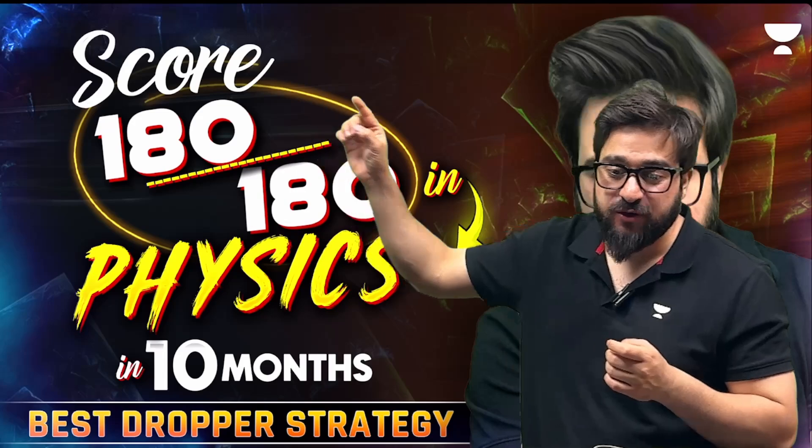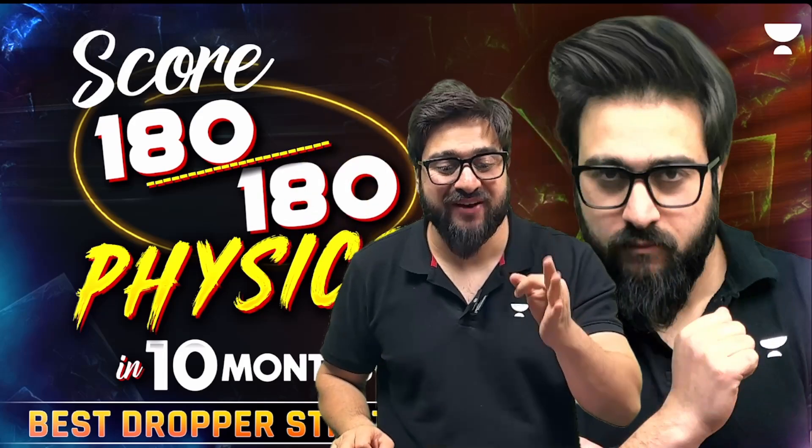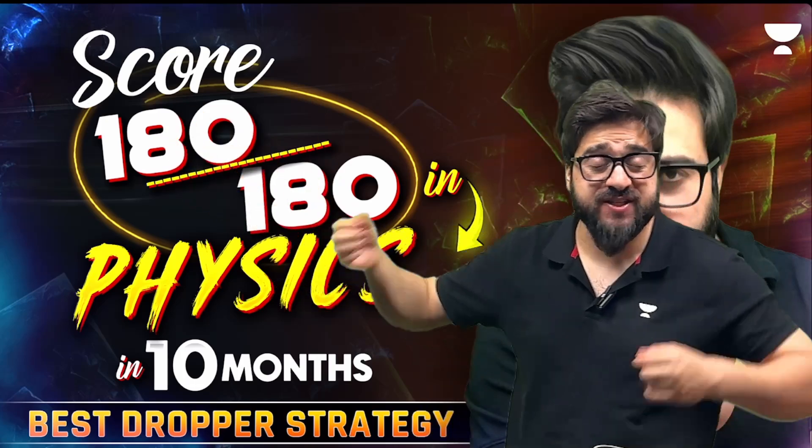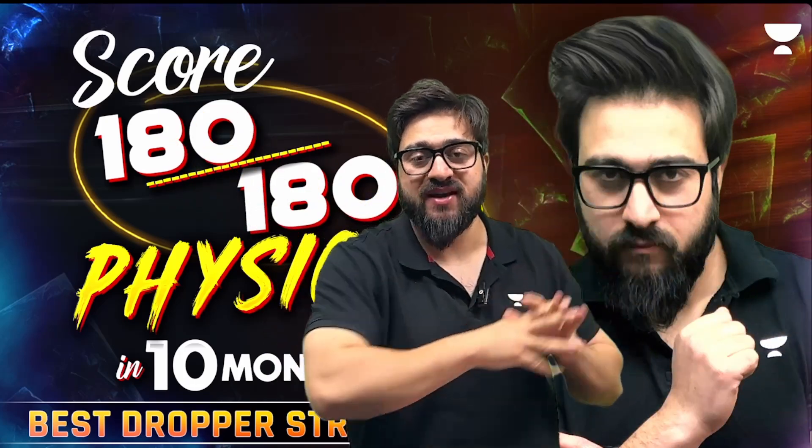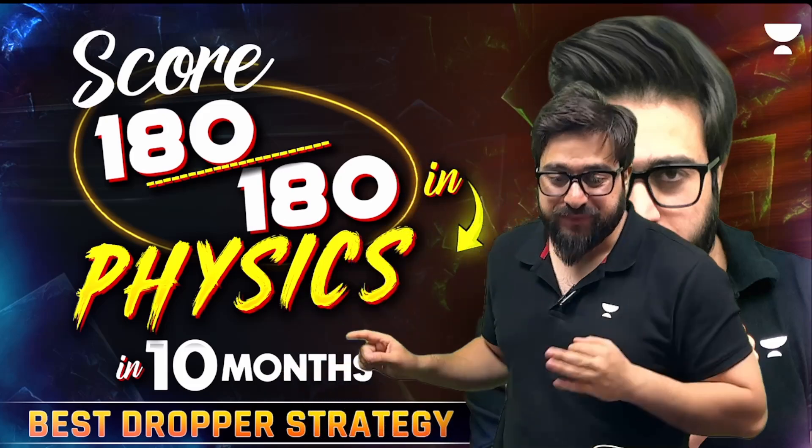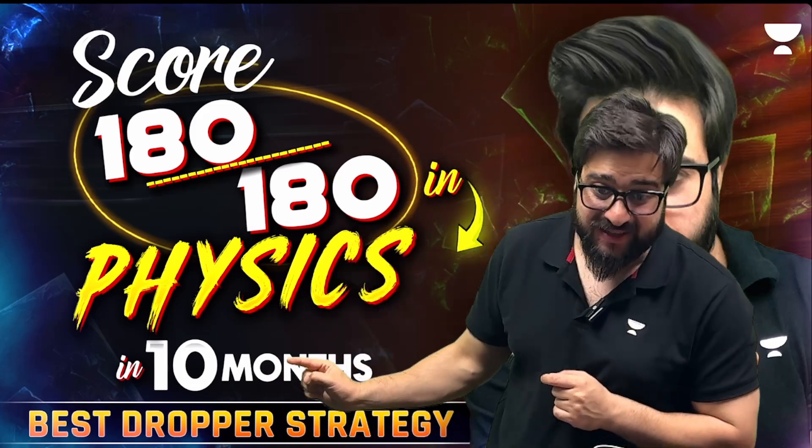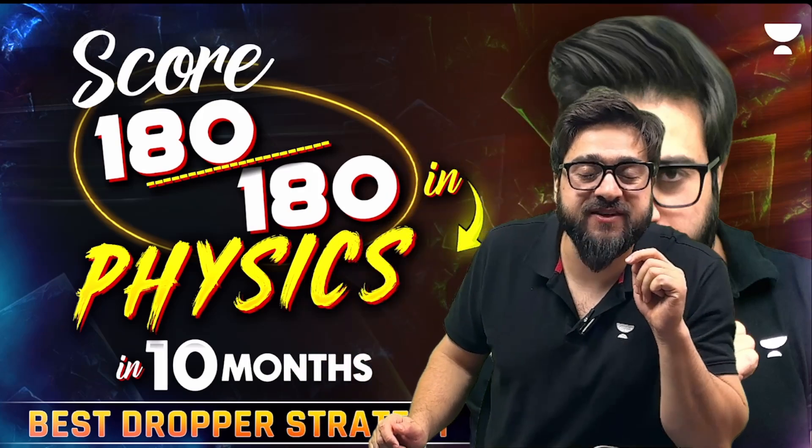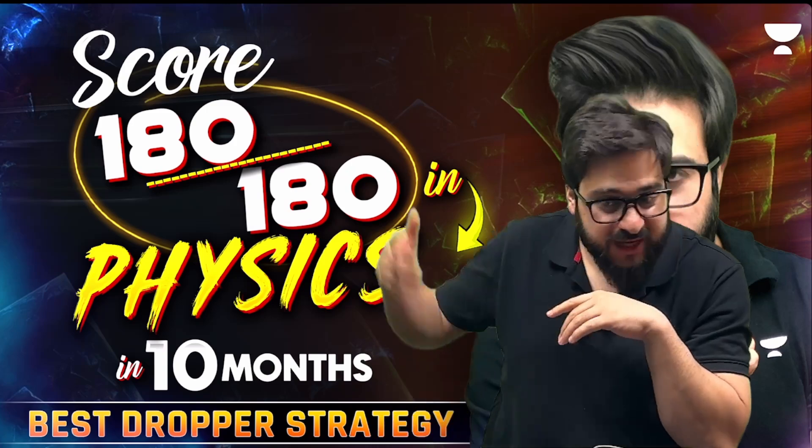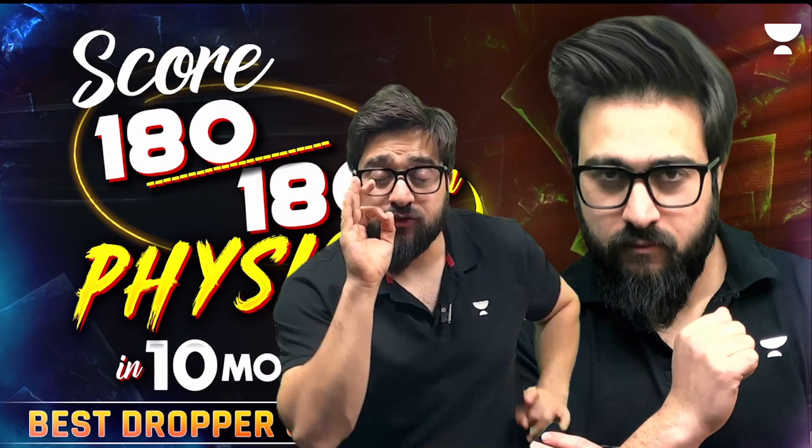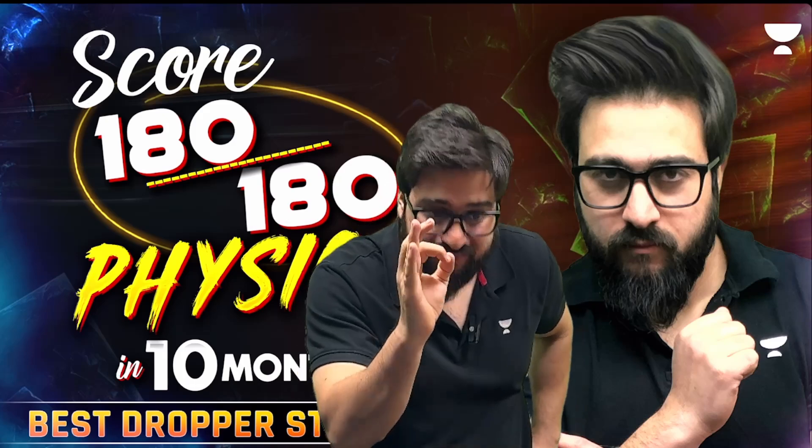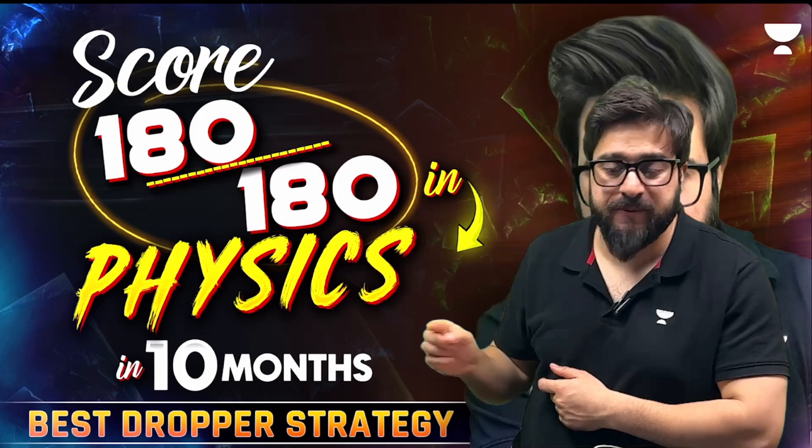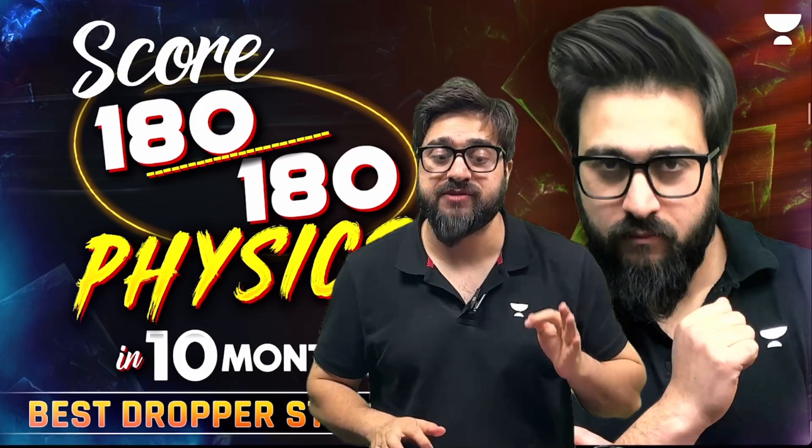So now in this video, we will be talking about my dear friends, how you can make the physics extremely strong, how you can score 180 out of 180 in physics. If not 180, at least 170 plus in your physics. This will be the best dropper strategy in next 10 months. I know NEET 2025 is coming on next 5th May, so for that we have to prepare our physics. We have to make our physics very strong. Now there are some points which you need to keep in your mind by which you can make this subject extremely strong.